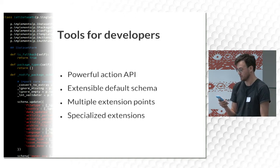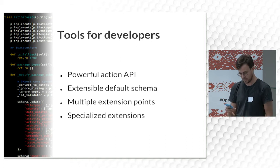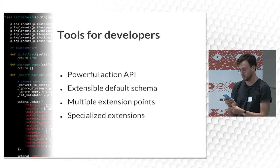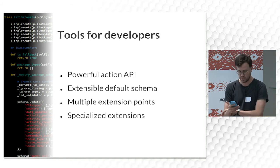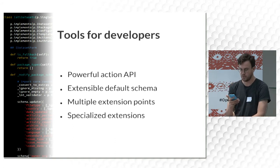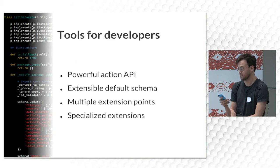In most cases this involves something as simple as changing the metadata schema or changing the look and feel of the site, but there are extension hooks at all points of the stack to allow customizations to almost any part of CKAN.